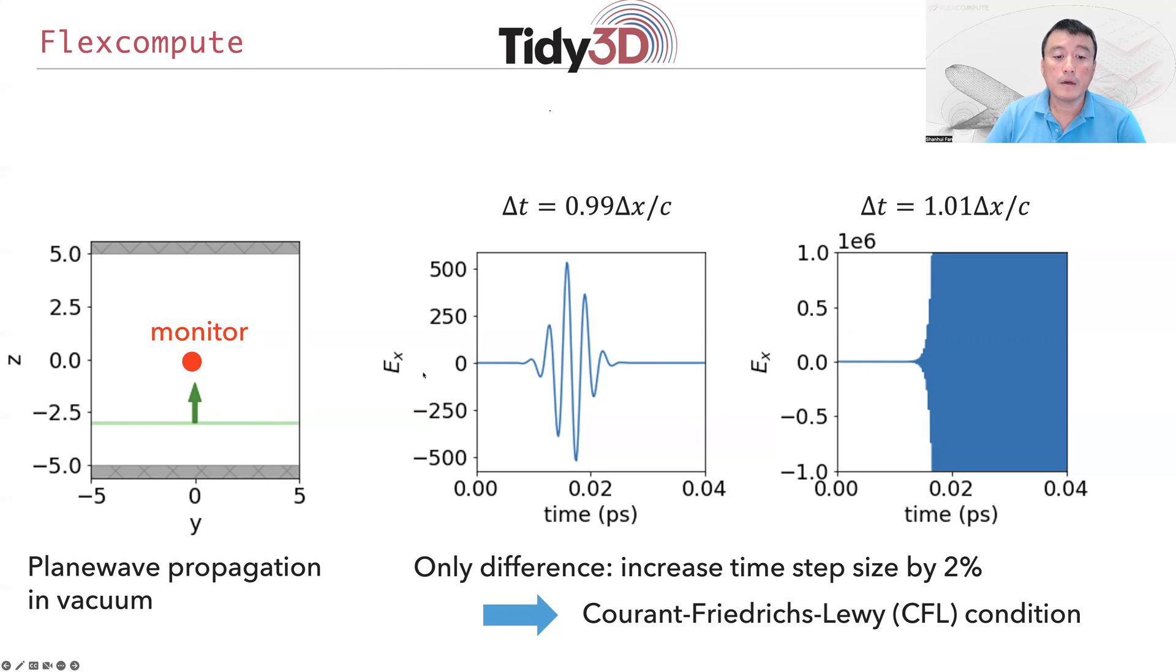On the left is what a good result would look like. The electric field has a Gaussian temporal pulse that passes through the monitor point. This is by choosing Δt, the time step, to be slightly smaller than the spatial discretization divided by speed of light.